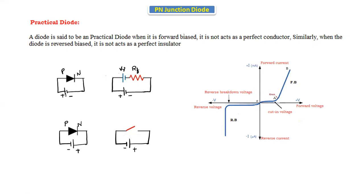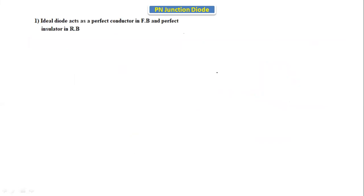In the ideal characteristics, the diode starts conducting from the zero position only. This is the difference between the ideal and practical diodes. Now let us see the exact differences between the ideal diode and the practical diode.